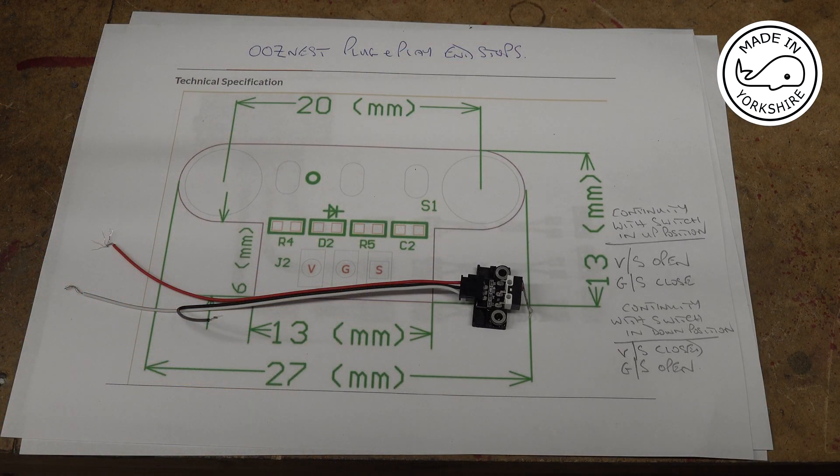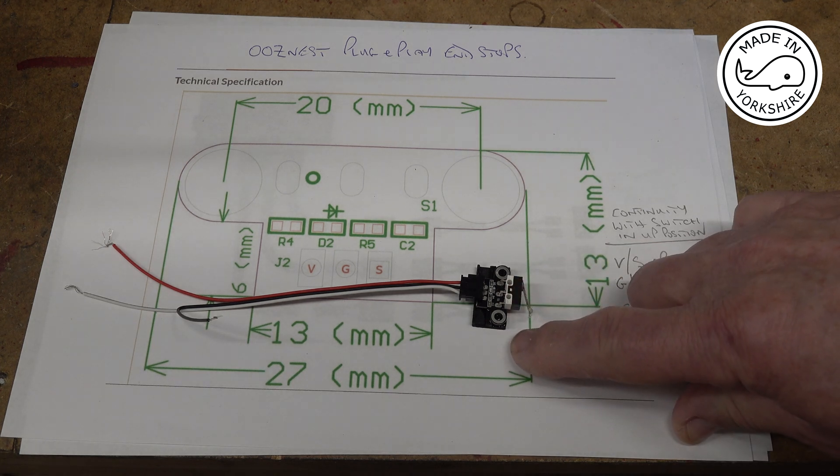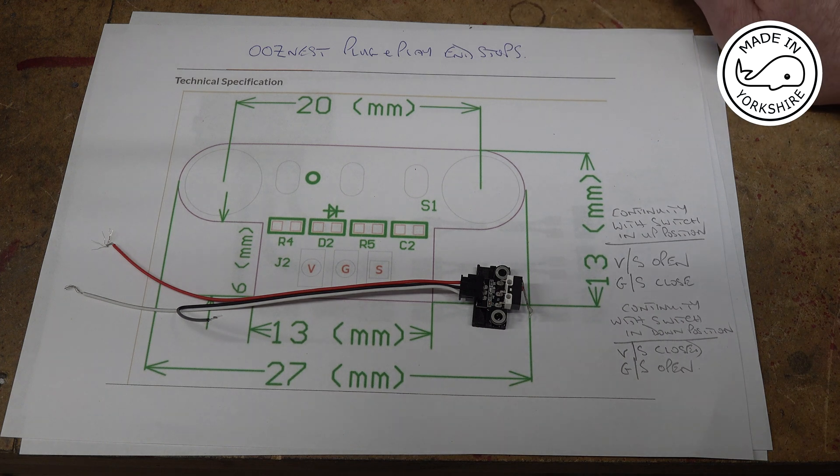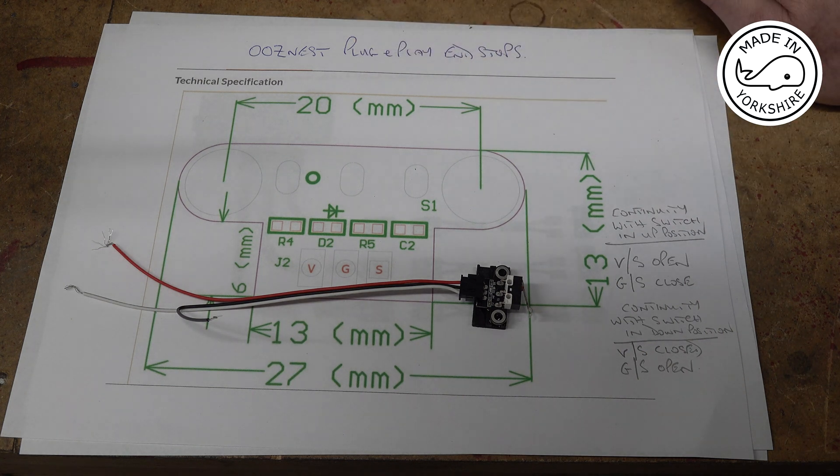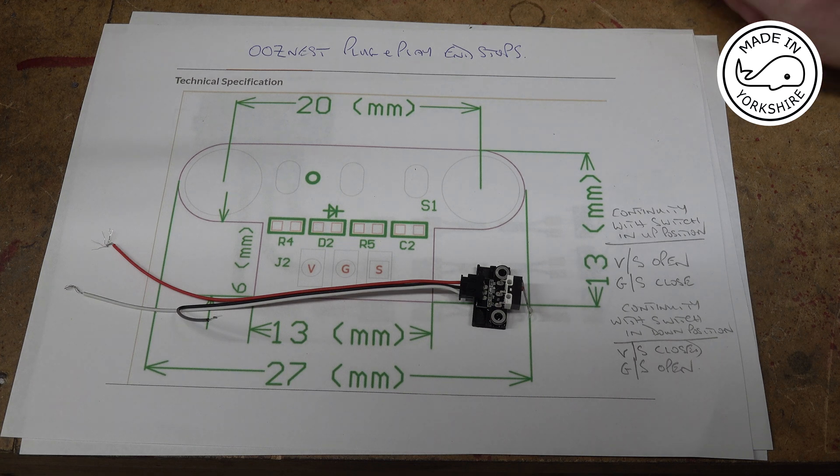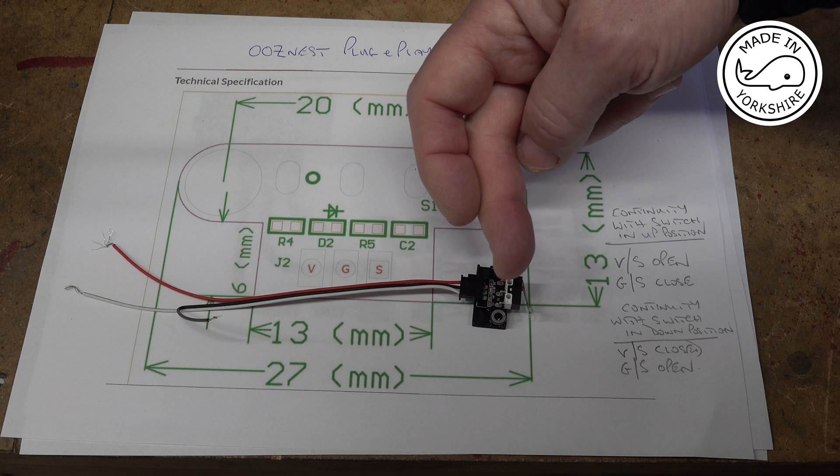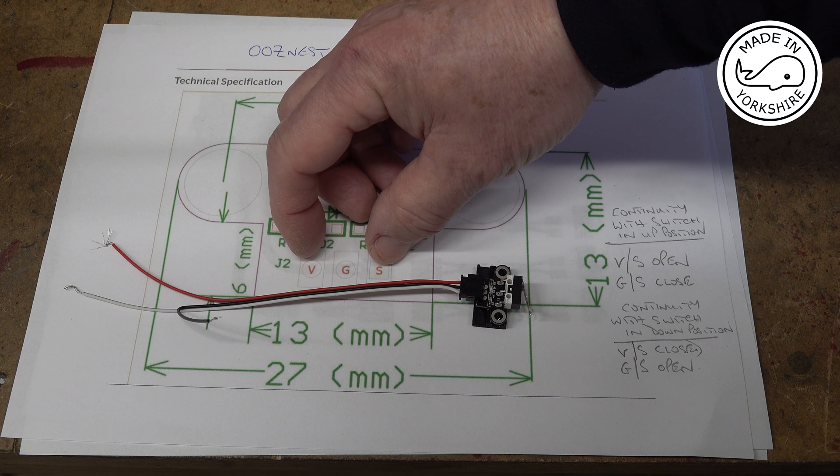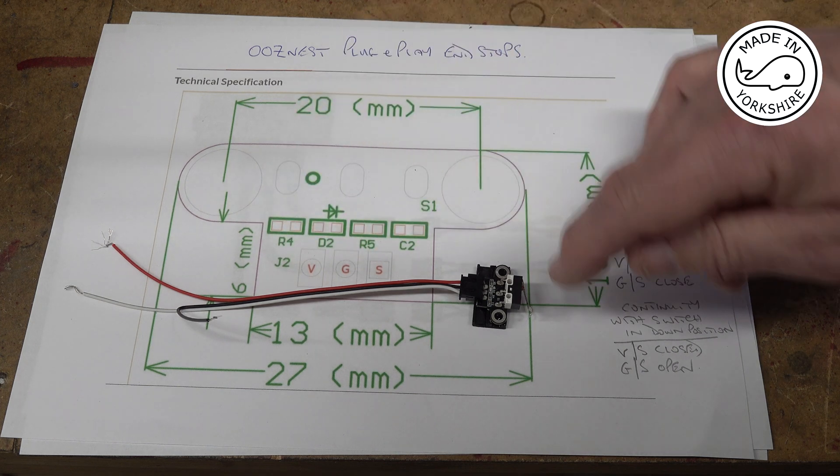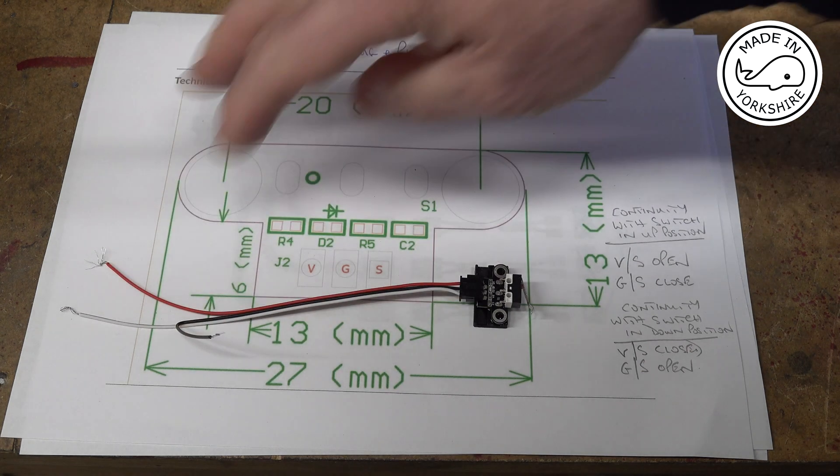So in my last video I was trying to get one of these limit switches working which was from Ooznest to plug and play and stop. I didn't realize at the time that these aren't plug and play for the controller I've got. Having put a continuity tester on, I was able to work out with the switch up, VNS was in an open position. So that's the white and the red wires, so no circuit running.